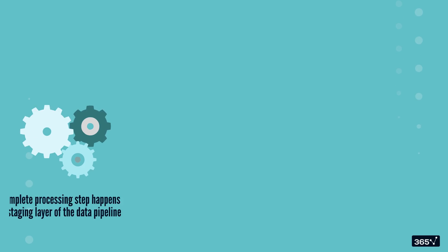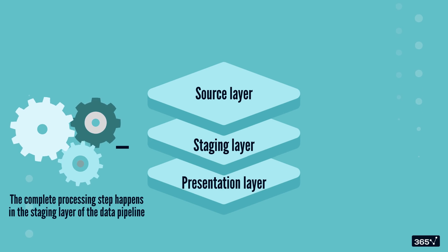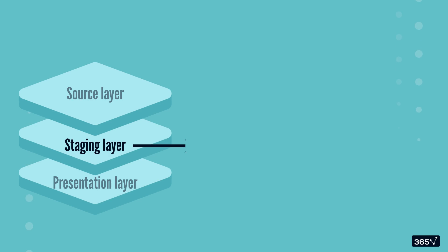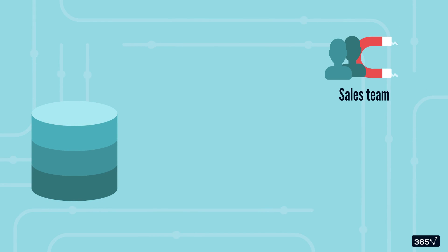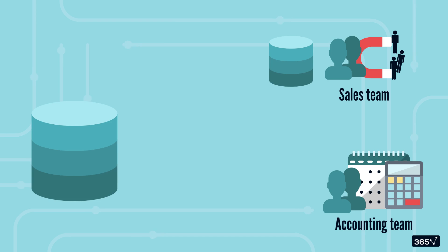The complete processing step, whether ETL or ELT, happens in the staging layer of the data pipeline. Think of the staging area as a preparation zone. Data is cleansed and organized before it moves into specific areas tailored for distinct end-user needs. For instance, data required by the sales team might move into a different destination than data that's needed by the accounting team.